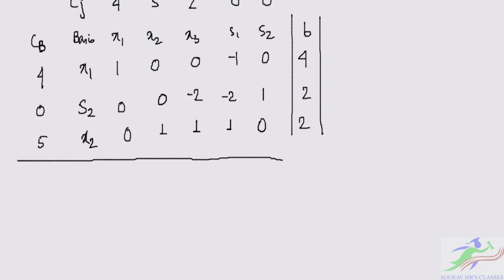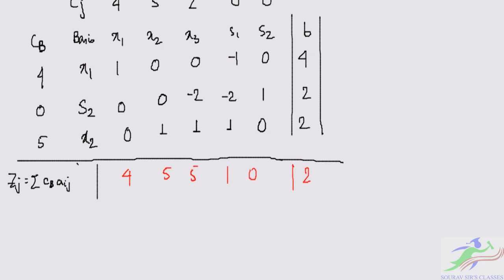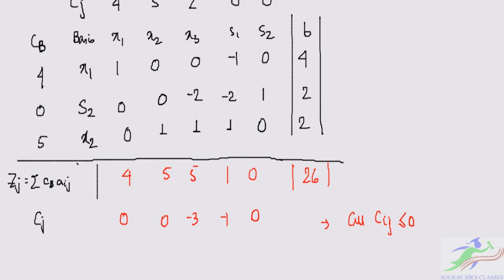Computing Zj = Σ(CB · aij) gives [4, 5, 5, 1, 0], and Z = 26. The Cj − Zj values are: 0, 0, −3, −1. From the above table, all Cj − Zj ≤ 0, and there are no artificial variables remaining — a1 and a2 are not in the basis.